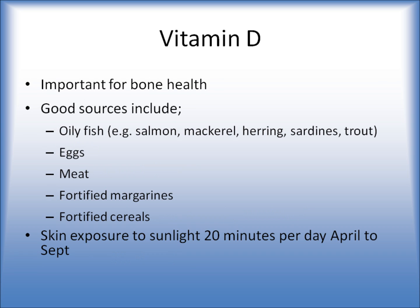Vitamin D sources in the diet are quite limited. The good sources are oily fish, for example salmon, mackerel, herring and sardines, as well as eggs, meat, fortified margarines — most that you buy in the supermarket will be fortified — and fortified breakfast cereals. Also, during April to September in this country, if you expose your arms, face and the top of your chest to the sun for about 20 minutes without sunscreen, your body will be able to produce and make some vitamin D.